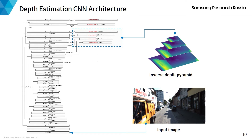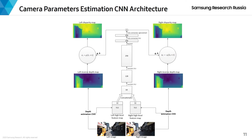Our depth estimation CNN is vastly based on the DispNet architecture, adding larger convolution kernels in the beginning to enlarge the receptive field and correction map generation in the ending part. We generate a four-level pyramid for output inverse depth maps and a two-level pyramid for the correction maps. Our camera parameters estimation CNN is a relatively shallow CNN, taking as input a concatenation of small subsets of high-level feature maps and outputting two scalar parameters, gain and bias.